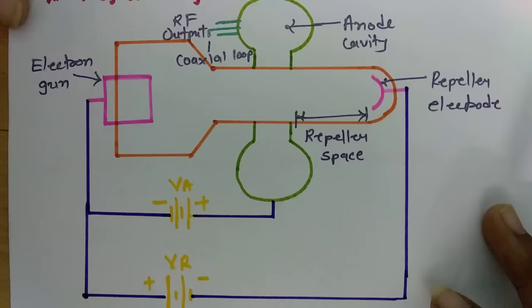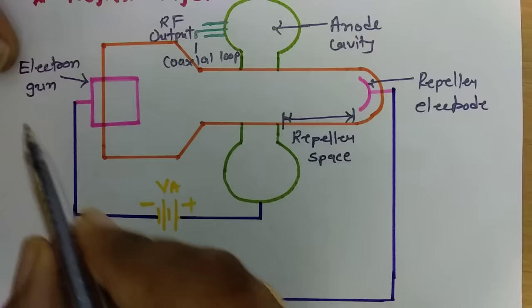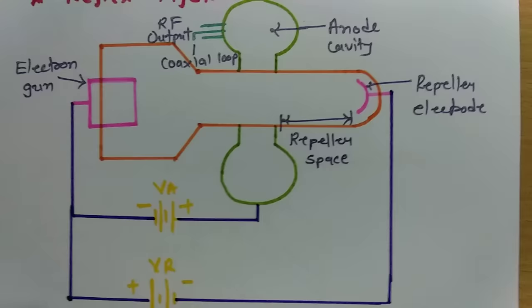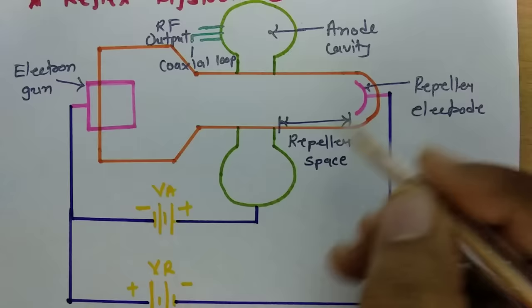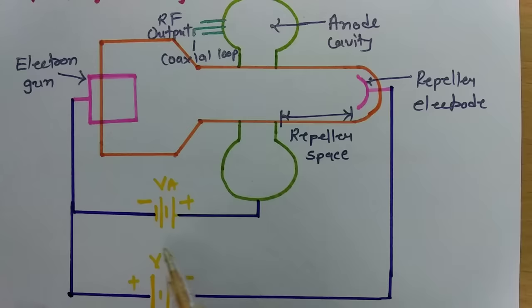In this structure of the reflex klystron we can see that an electron gun is there. This electron gun is connected with the negative terminal, and the positive terminal is connected with the anode cavity. Here we are connecting the repeller with the negative terminal of the repeller voltage.